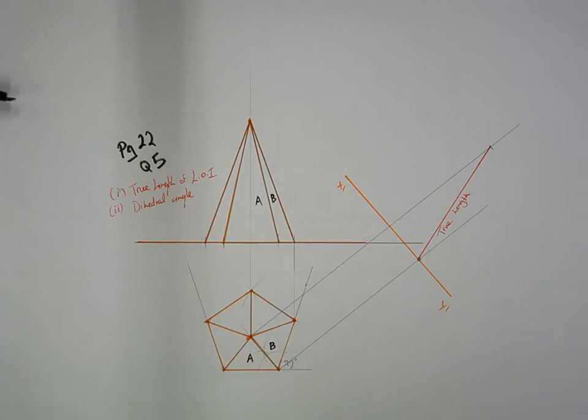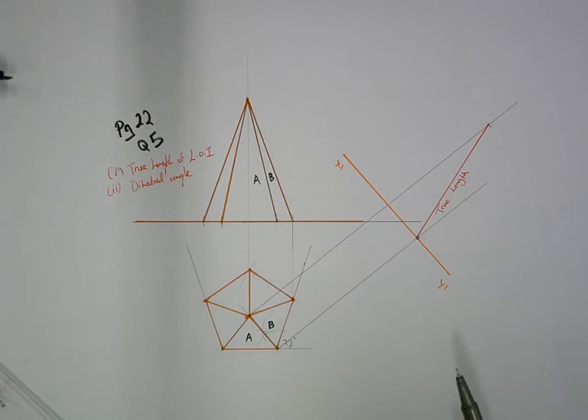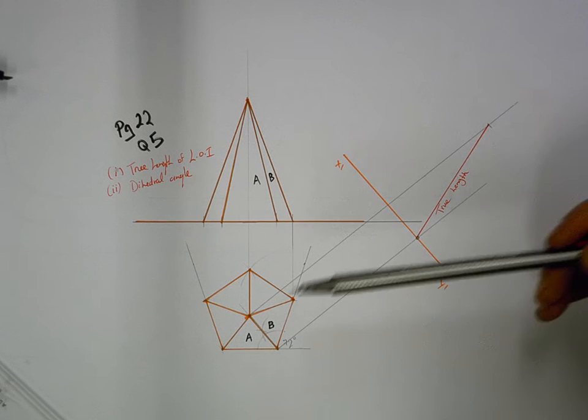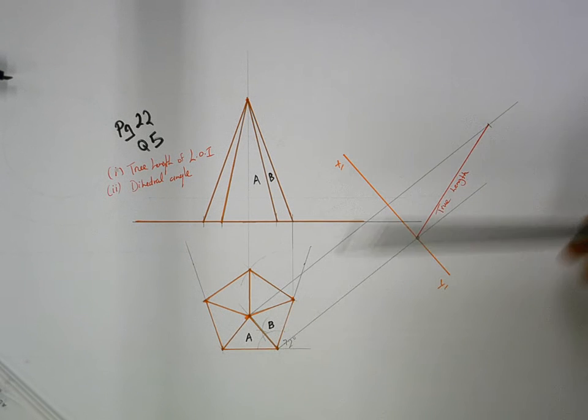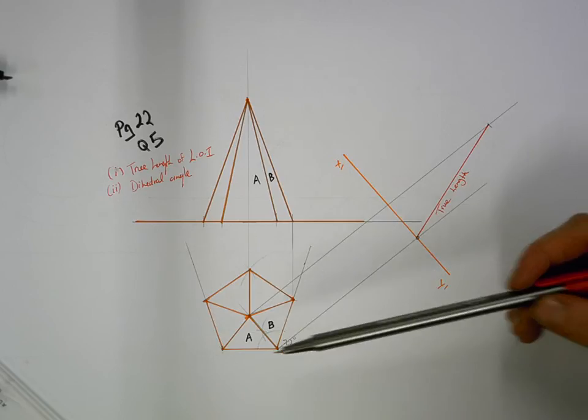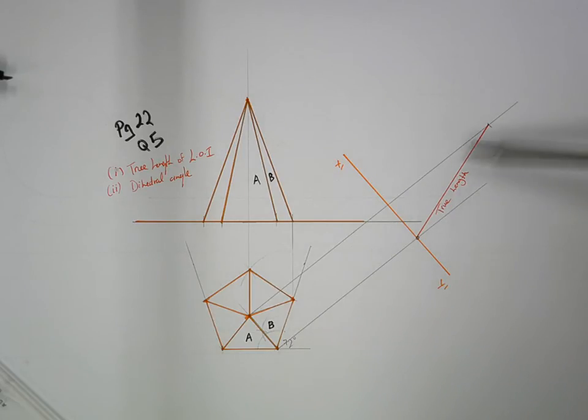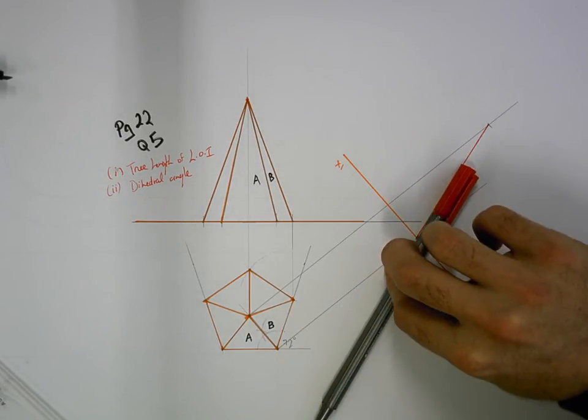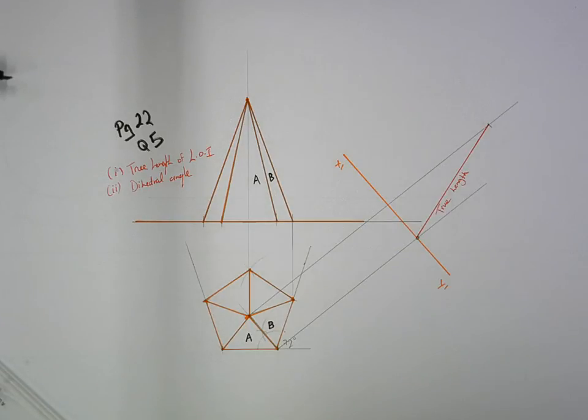Part two of the question then is asking for the dihedral angle between the two surfaces. So if you think back to any dihedral angle questions that we've done, the first thing you have to do is identify your line of intersection. We've done that. The second thing you have to do is get a true length of your line of intersection. We've also done that in our previous part. And then the final step is to take the line of intersection as it stands there and look straight down through the barrel of it for a second auxiliary. Now you can look down or upwards. It doesn't make any difference.